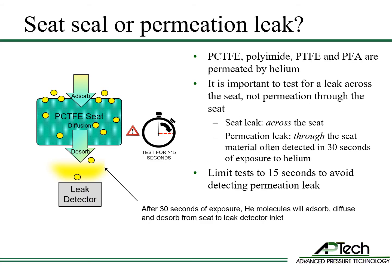With helium leak testing, it's important to note the difference between an across-the-seat leak and a seat permeation leak. A seat permeation leak is a leak through the seat material. A permeation leak will be detected quickly after seat exposure to helium. Even if the seat is sealing normally, a permeation leak will be detected in 30 seconds or less. Common seat materials are easily permeated by helium in 30 seconds exposure time. APTEC recommends that an across-the-seat leak test is completed within 15 seconds or less to avoid detection of a permeation leak.